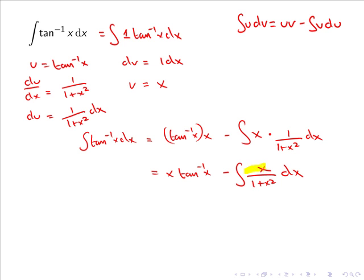Now we address the remaining integral of x over 1 plus x squared. The numerator is a multiple of the derivative of the denominator, so we can use substitution to solve this integral.